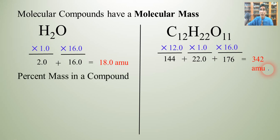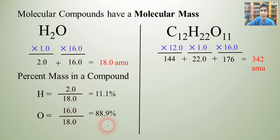And once again we can find the percent mass in the exact same way as we did for ionic compounds. For hydrogen, we're going to take this 2 that we got here and divide it by the 18 total. So when you do that, it's about 11.1%. And for oxygen, it's the same thing. We take the 16.0 and divide by 18 and we get 88.9%.